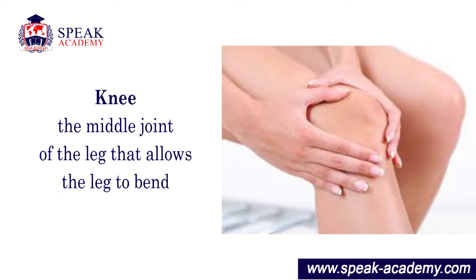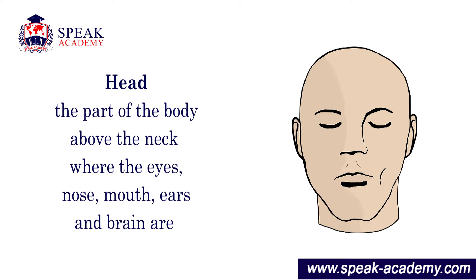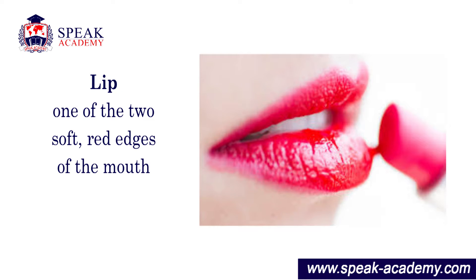Knee: the middle joint of the leg that allows the leg to bend. Head: the part of the body above the neck where the eyes, nose, mouth, ears, and brain are. Lip: one of the two soft red edges of the mouth.